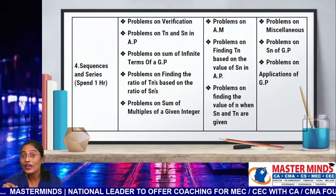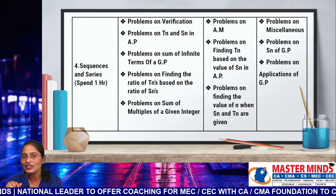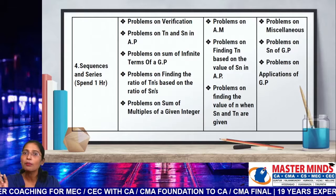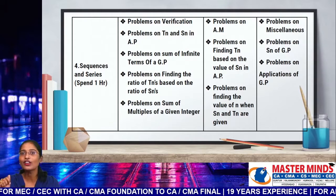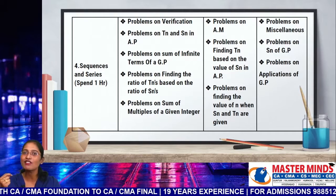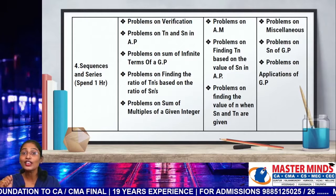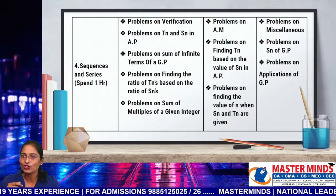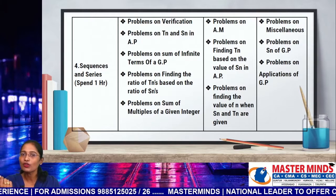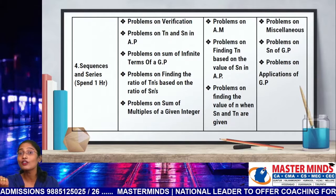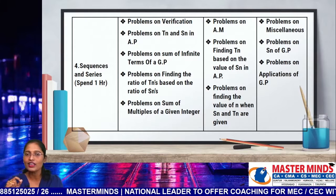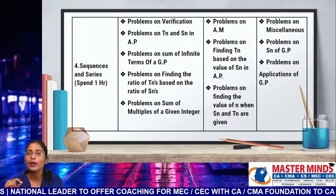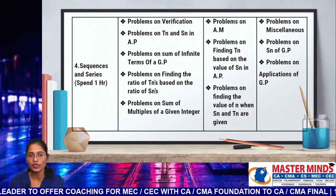The next topic to be revised is Sequence and Series. Try to spend at least one hour here. Highest priority models: problems on verification, problems on Tn and Sn of AP (nth term and sum of n terms of AP), problems on sum of infinite terms of a GP (S-infinite of a GP), problems on finding the ratio of Tn's based upon the ratio of Sn's, and problems on sum of multiples of a given integer. Second priority: problems on AM, problems on finding Tn based upon the values of Sn of an AP, and problems on finding the value of n based upon the values of Sn and Tn. Third priority: problems on miscellaneous, problems on Sn of a GP, and problems on applications of a GP.